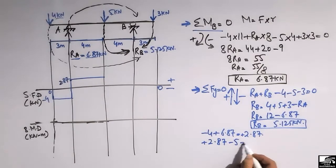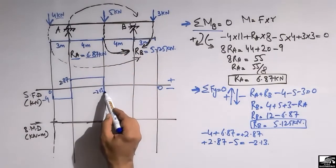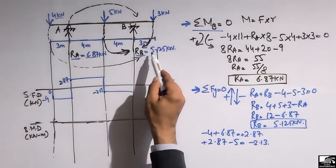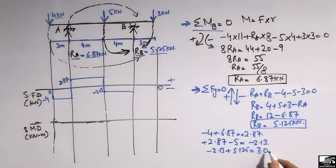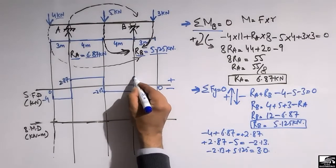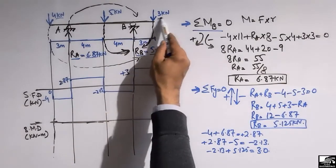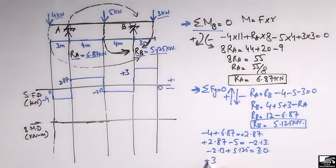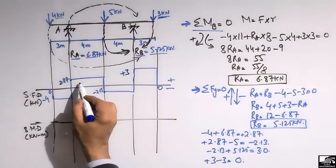There is again no load on the beam, so a straight line continues at +2.87. Then the 5 kN load acts downward: 2.87 − 5 = −2.13 kN, so we go to −2.13. Again a straight line, then RB = 5.125 acts upward: −2.13 + 5.125 ≈ +3.0. Continuing with no load, then the 3 kN force acts downward: 3 − 3 = 0. The shear force returns to zero.